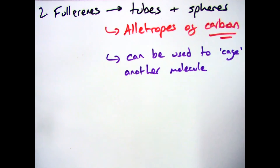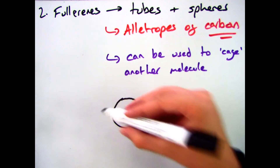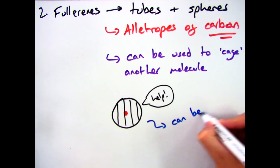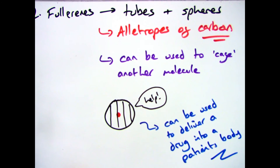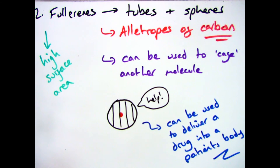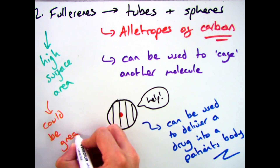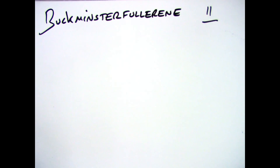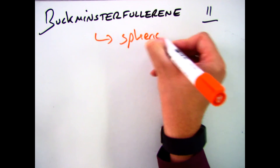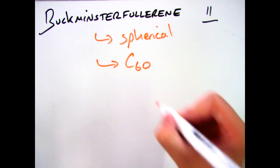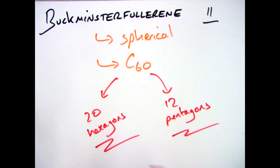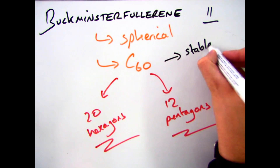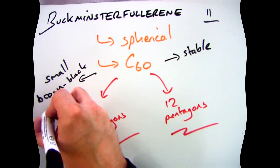The spherical ones have a particular use in that they can be used to cage other chemicals inside, which could become particularly useful in trying to deliver chemicals into a human patient. They also have a high surface area, which means they could become really useful catalysts. One of the main examples is Buckminster fullerene, also known as carbon-60, which is made up of 20 hexagons and 12 pentagons. It is a stable substance and exists as browny-black crystals.